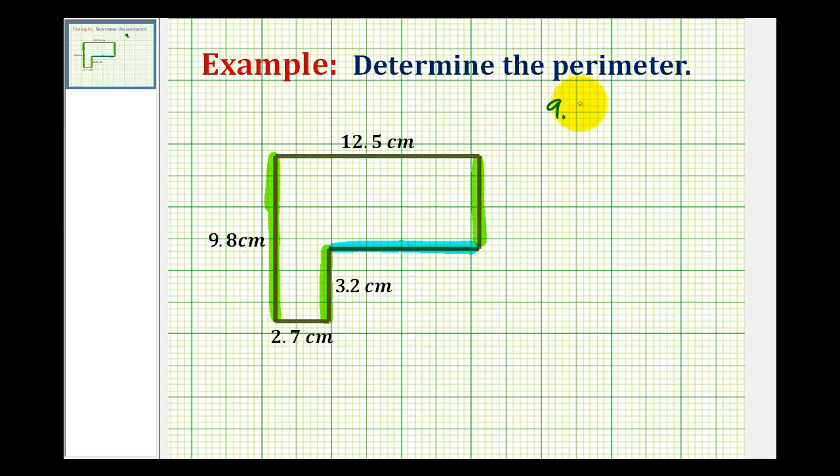So 9.8 minus 3.2 will give us the length of this missing side here. 8 minus 2 is 6, and 9 minus 3 is equal to 6. So this side here has a length of 6.6 centimeters.